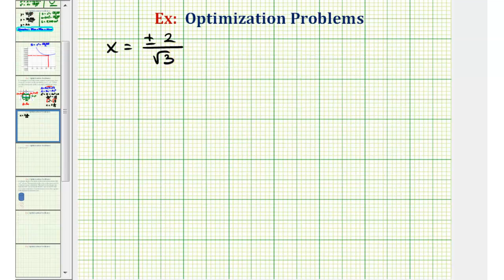Let's go ahead and rationalize the denominator. So we'll multiply both the top and bottom by square root 3. So again we have two critical numbers. One is x equals negative 2 square root 3 over 3. And the other is x equals positive 2 square root 3 over 3.